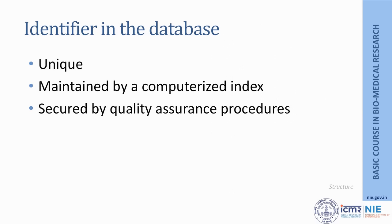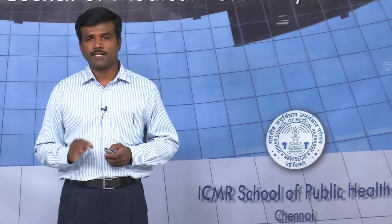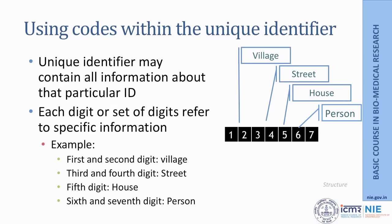The first important element in a database is called the identifier. This identifier has to be unique, and that is why it is called a unique identifier. It is maintained by a computerized index and has to be secured by a quality assurance procedure that guarantees each piece of data has its own internal validity. The code can comprise information that talks about that particular individual.